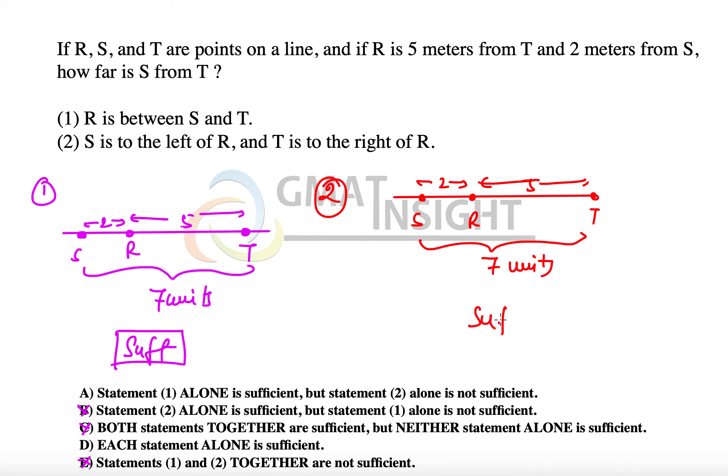So the second statement as well is sufficient to answer the question. Therefore the final answer to the question becomes option D. Each statement alone is sufficient to answer the question. Thank you so much.